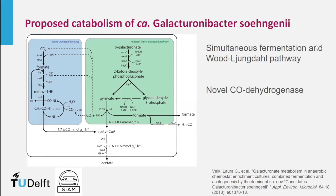Another interesting example is an organism called Galacturonibacter. We were interested in how galacturonic acid is converted in mixed cultures. Recent work by Lara Falk showed organisms with the traditional galacturonic acid fermentation known from Klebsiella — producing acetate, formate, or hydrogen — but this organism integrated the traditional galacturonibacter pathway with the Wood-Ljungdahl pathway in one cell. Interestingly, it had all the enzymes of the known Wood-Ljungdahl pathway identical to what was known, except for a carbon monoxide dehydrogenase that is different from any previously known, revealing more diversity in these enzymes than was recognized until recently.